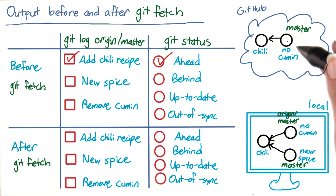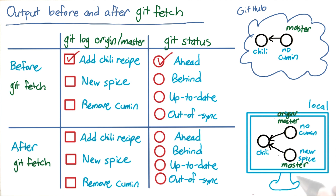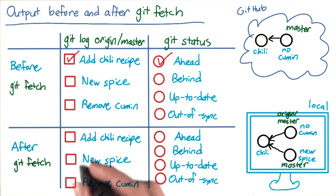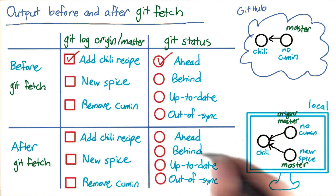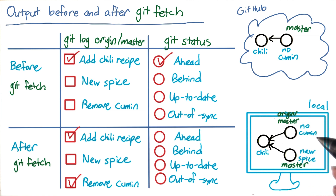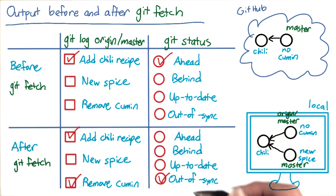Now when you run git fetch, git fetches the no cumin commit and updates the branch origin slash master to point to that new commit. Your local master still points at the new spice commit like it did before. So at this point you have a local copy of the no cumin commit saved and you can access it via git log. If you run git log now, you'll see both the no cumin commit and the chili commit. You still won't see your new spice commit since that's only on your local master branch. Now since both origin slash master and master have one commit that is not present on the other, git status will show that your branch is out of sync with origin slash master.